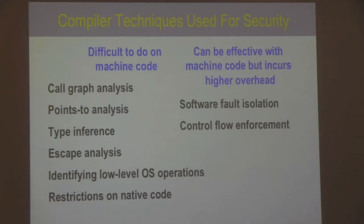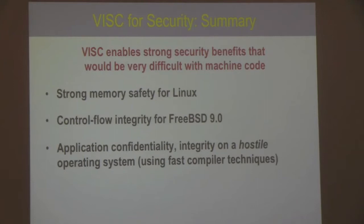To summarize the security work: VISC enables much stronger security benefits than what would be available with only machine code. We've shown strong memory safety for the Linux kernel, control flow integrity for FreeBSD, and application confidentiality and integrity against a hostile operating system — all enabled by using a VISC system organization. The key reason VISC was important is that these security policies use compiler techniques requiring rich program analyses — like call graph extraction, pointer analysis, type inference, escape analysis — that are very difficult to do on machine code.